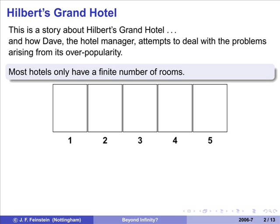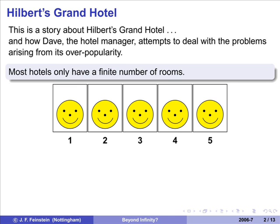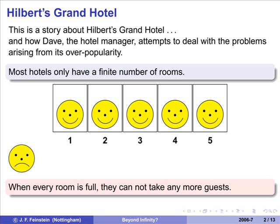So most hotels have only got a few rooms in. Here's one with five. It's beginning to fill up. Now it's full, and the next person's a bit unlucky. Can't get in. That's the story of a finite hotel. Whenever room's full, you can't take anybody else in.